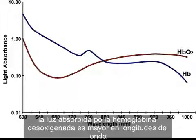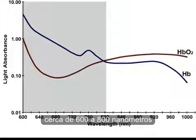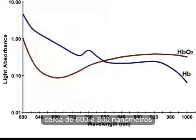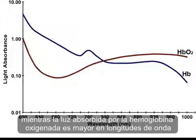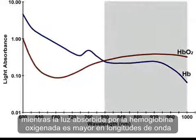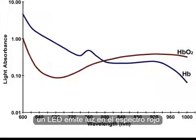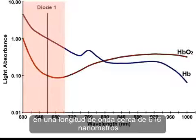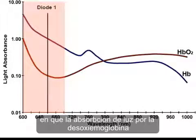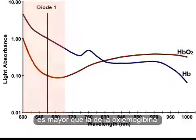The light absorption of deoxyhemoglobin is greater at wavelengths of 600 to 800 nanometers, while the light absorption of oxyhemoglobin is greater at wavelengths of 800 to 1,000 nanometers. One light-emitting diode emits light in the red spectrum at a wavelength of 660 nanometers, at which the light absorption of deoxyhemoglobin is greater than that of oxyhemoglobin.